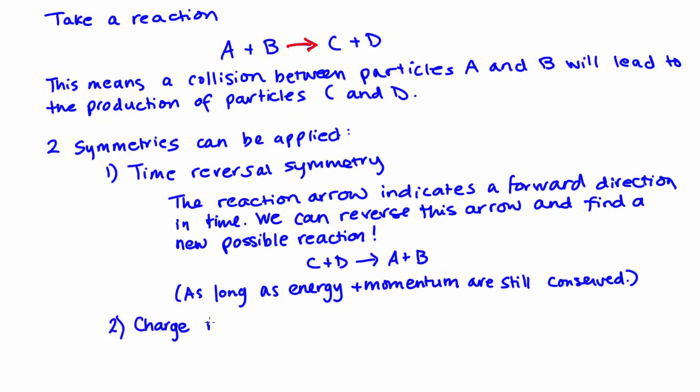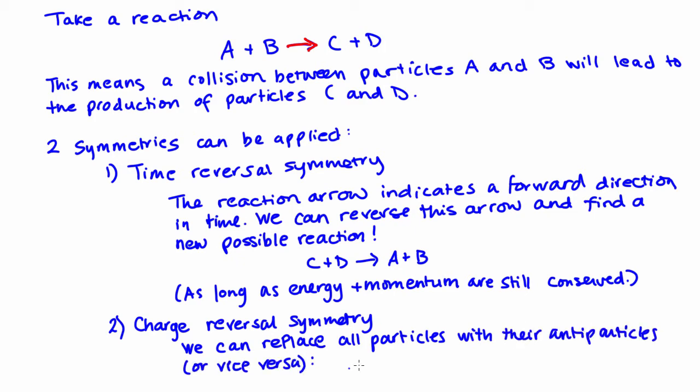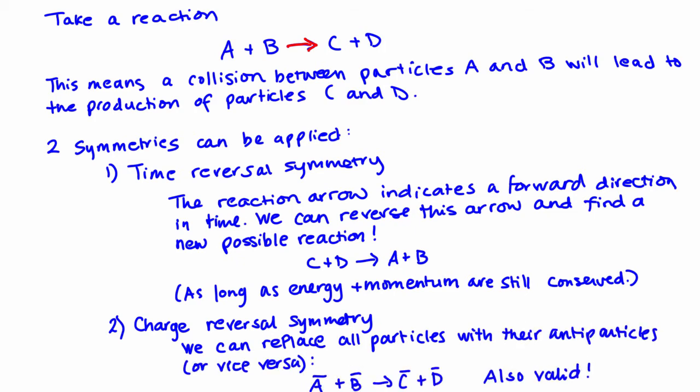The second is charge reversal symmetry. Charge reversal symmetry means we can replace all particles with their antiparticles or vice versa in any reaction equation. As it turns out you can also move any particle from one side of a reaction equation to another if you exchange it with its antiparticle after the move. This specific case of charge reversal symmetry is called crossing symmetry.